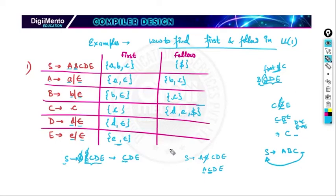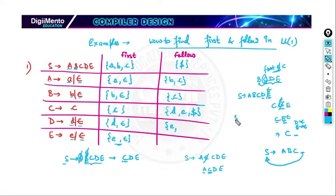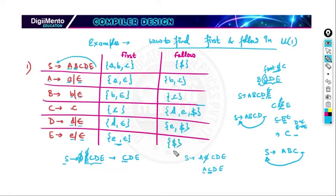FOLLOW(D): D is followed by E in S → ABCDE. FIRST(E) = {e, epsilon}. If E produces epsilon, nothing remains, so FOLLOW(D) = FOLLOW(S) = {e, $}. FOLLOW(E): E is at the end of S → ABCDE, so FOLLOW(E) = FOLLOW(S) = {$}. In this way we can find FIRST and FOLLOW for all variables.